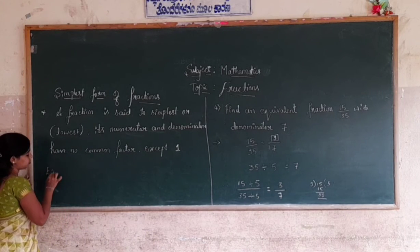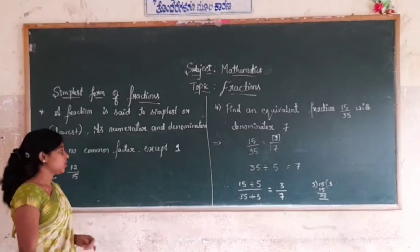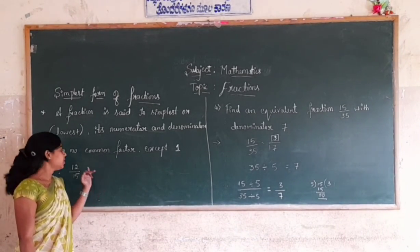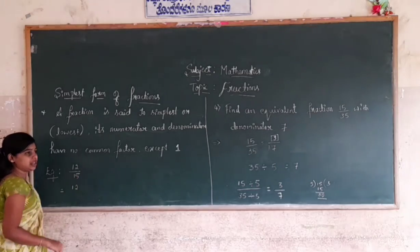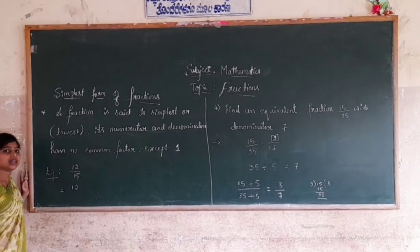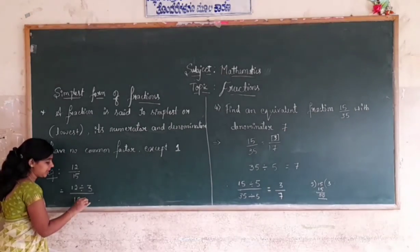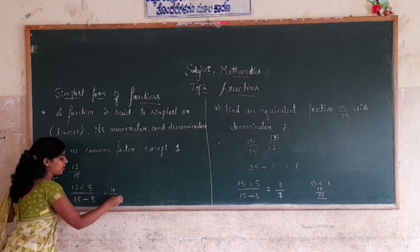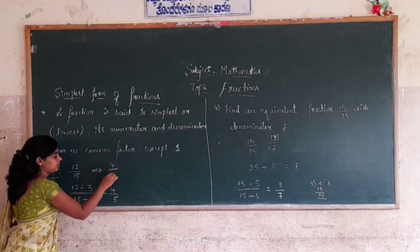Let's consider an example: 12/15. To get the simplest form of this fraction, divide both numbers by the same number. Both 12 and 15 are divisible by 3. So divide 12 by 3 and 15 by 3. We get 3 × 4 = 12 and 3 × 5 = 15. Therefore, the simplest form of 12/15 is 4/5.